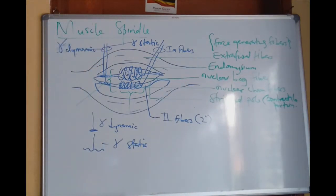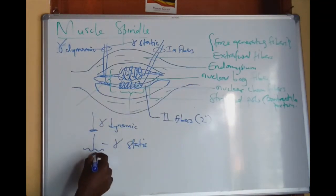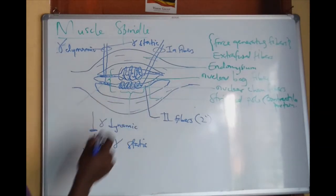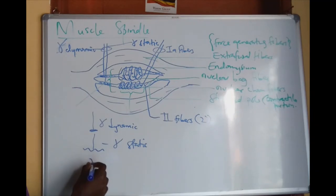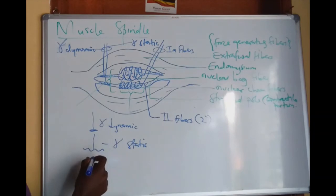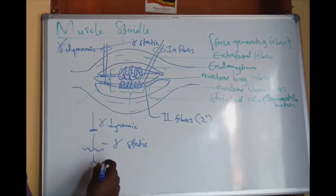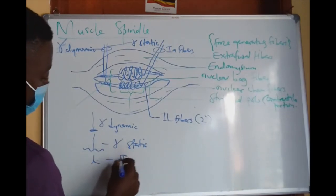Group 2 fibres have a flower-spray ending. It comes out like this — just like a flower spray. If viewed from above, it will be like this — like a flower. That is the Group 2 fibres.